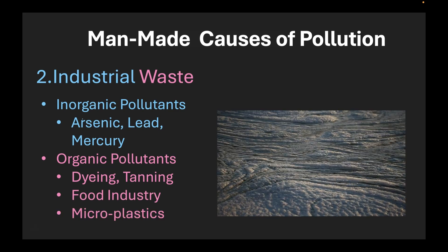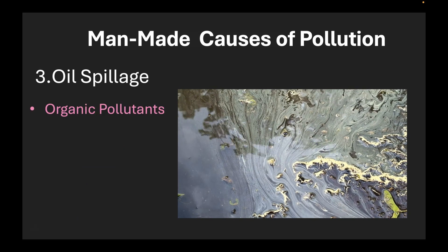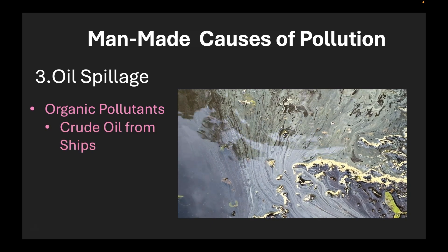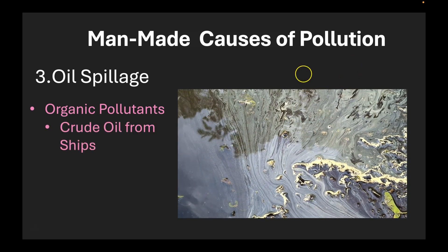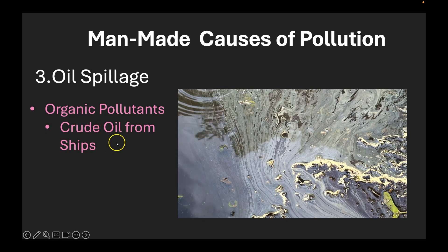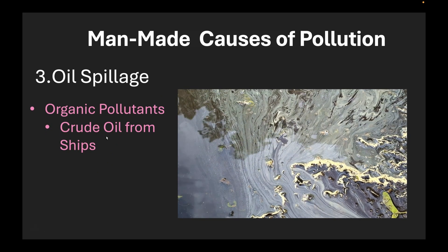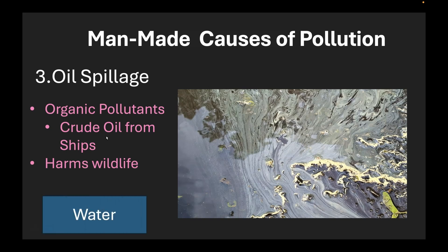Next let's discuss what oil spills are. Oil spills are organic pollutants. Oil spills occur primarily when crude oil from ships gets spilled into the sea, maybe because the ship breaks down or some leakage develops. Crude oil spills can cause a lot of harm to wildlife. Let's say this is a water body and the oil that is spilt into the water forms a layer on top of the water.